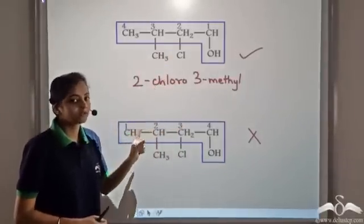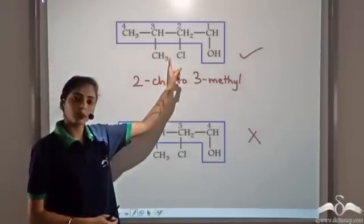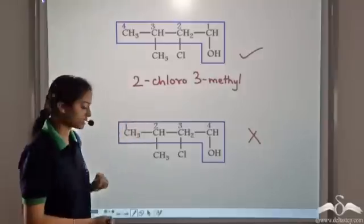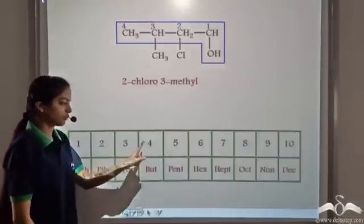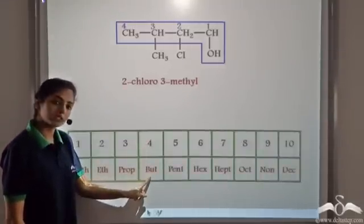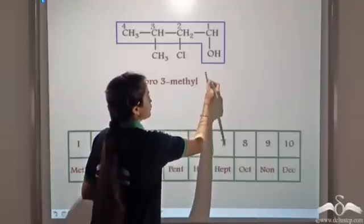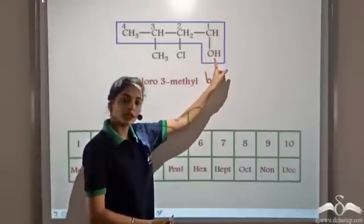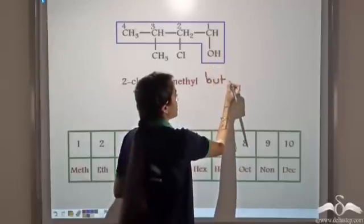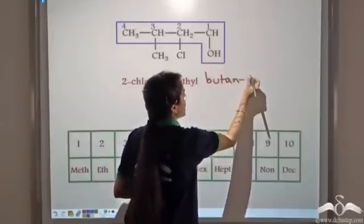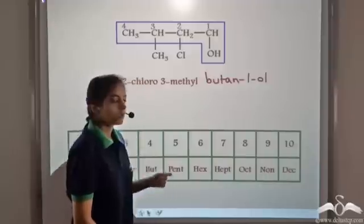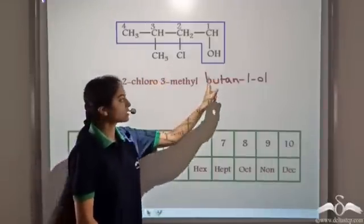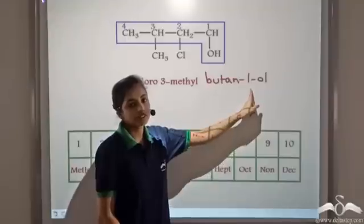Now we have to give the word root, which comes from the number of carbon atoms in the longest carbon chain. We see 4 carbon atoms, so 4 means 'but'. Since an OH group is present at position 1, this becomes 2-chloro-3-methylbutan-1-ol. This is the prefix given to the substituents, this is the word root, followed by the suffix.